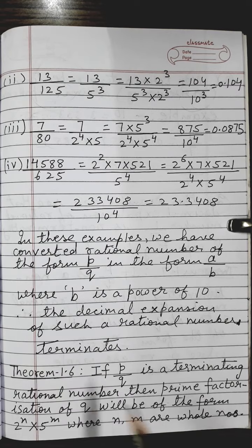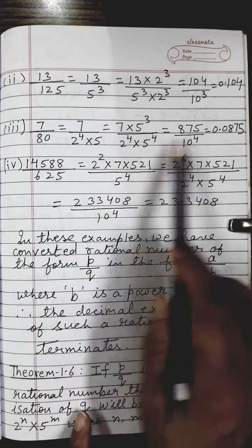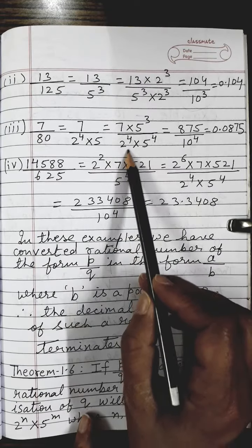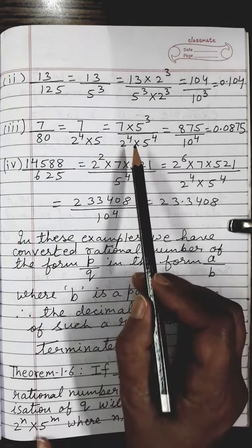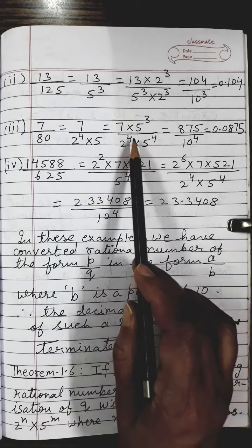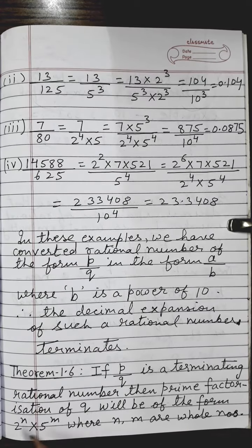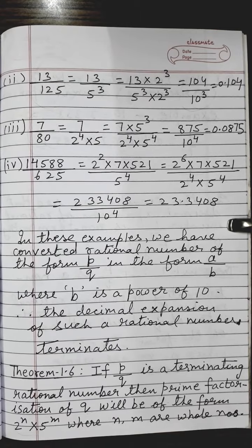To understand this, take the example 7 upon 80 — which is P upon Q and is a terminating rational number. The prime factorization of Q (which is 80) gave us 2 to the power 4 into 5 to the power 4. Here 2 and 5 are both prime numbers, so this is prime factorization of Q. The denominator is of the form 2 to the power 4 into 5 to the power 4 — these exponents 4 and 4 are whole numbers, representing n and m. So whenever the denominator is of the form 2^n × 5^m, the rational number is a terminating rational number. This is theorem 1.6.